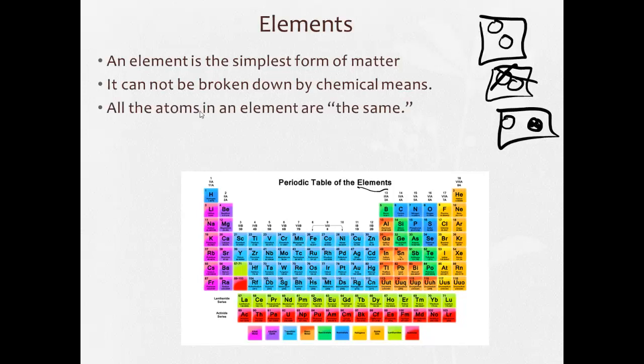All the atoms, the smallest part, we'll get into atoms in the next unit, they are the same. That's why when we draw an element, we try to draw each one the same. And they are found on the periodic table. Each one of these here on the periodic table is an element.